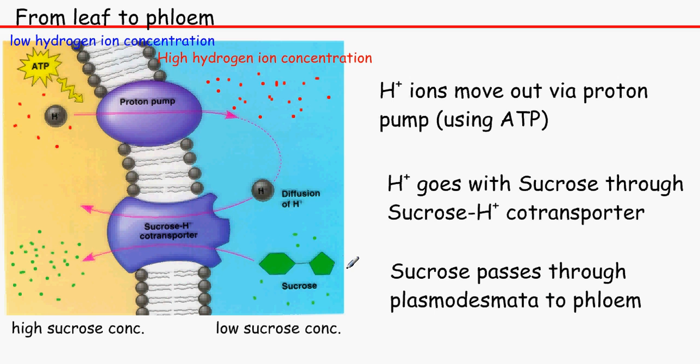So after all that happens, we've got the high concentration here. Then it moves through the plasmodesmata, which are the gaps in between the cell walls, onto the phloem.